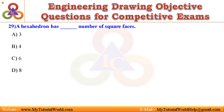Question 29. A hexahedron has how many square faces? A. Three, B. Four, C. Six, D. Eight. Answer is Six.